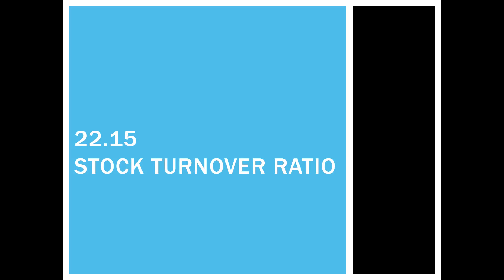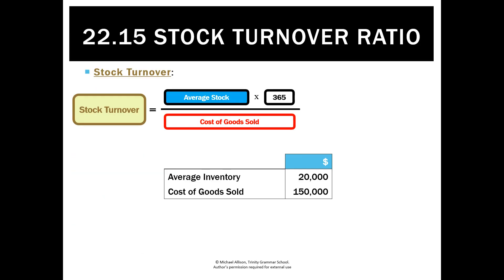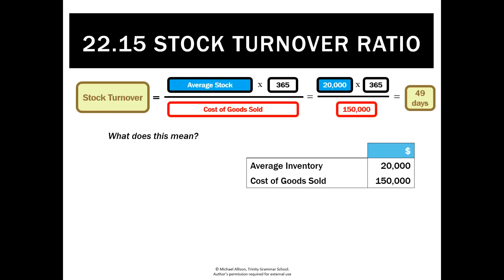As part of our efficiency ratios, we're going to look at the three ratios we've already covered from chapter 20, and the first one is the stock turnover ratio. We calculated that by average stock times 365 divided by cost of goods sold, and in this case we ended up with a ratio of 49 days.